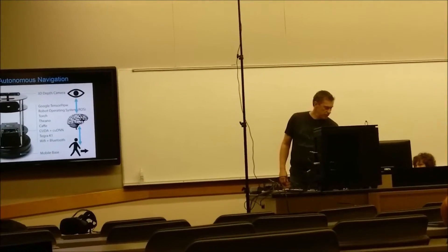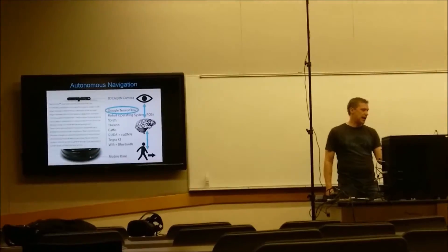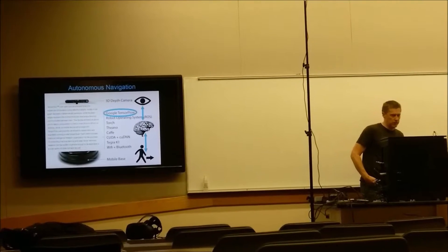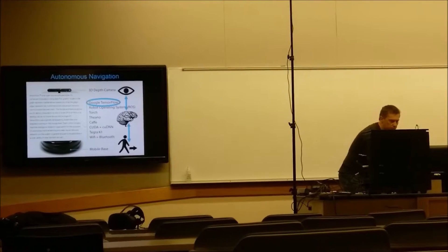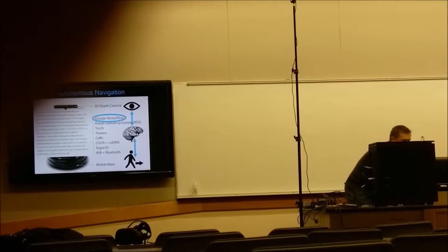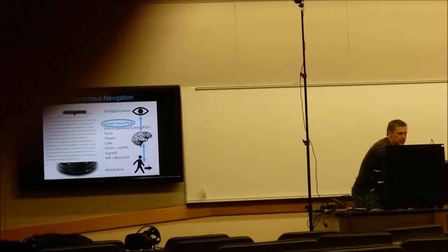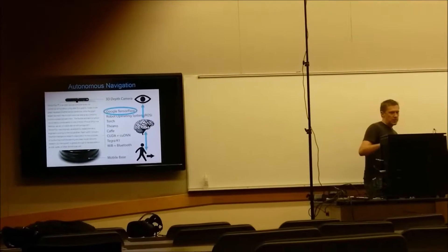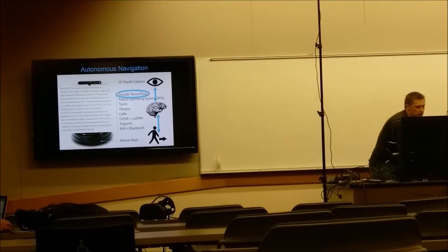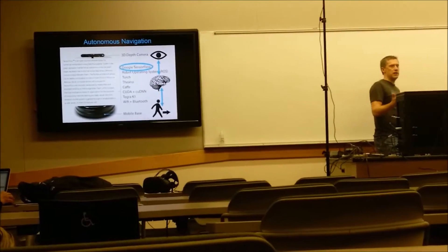We're going to focus on those two blue arrows. I'm just going to go down the list and at a high level describe what each one of these are. Google TensorFlow is the newer library. It's an open source software library for numerical computation using data flow graphs. The nodes in the graph represent mathematical operations, while the graph edges represent the multi-dimensional data arrays, called tensors, communicated between them.